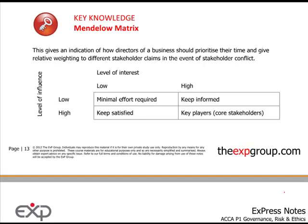The next thing to look at is the Mendelow Matrix, which considers how directors who are running a business should think about prioritizing their time and giving relative weighting to different stakeholder claims in the event of stakeholder conflict.